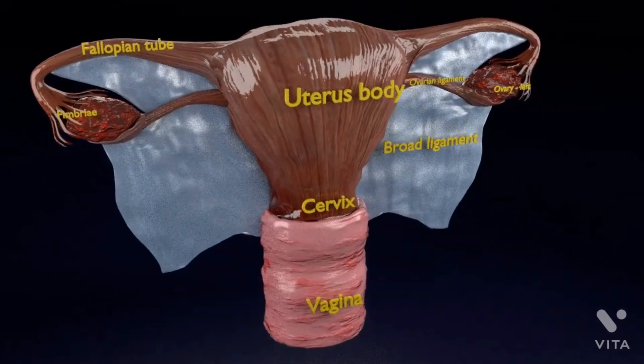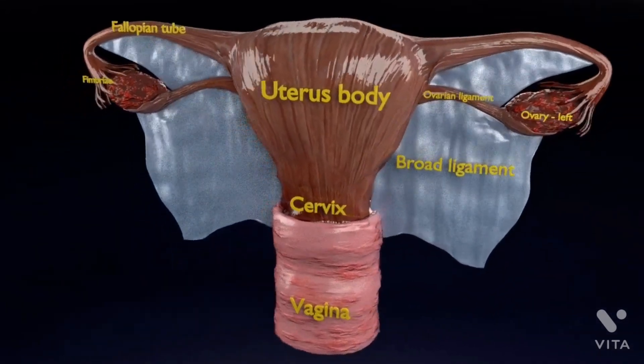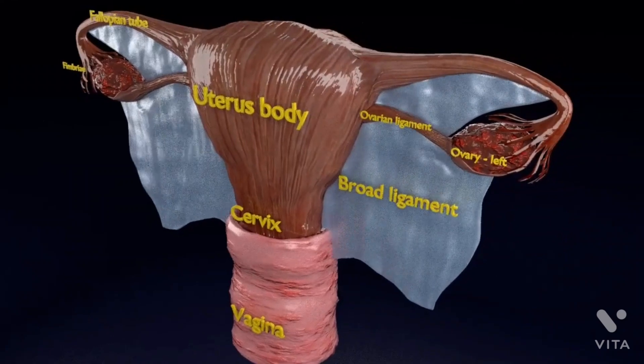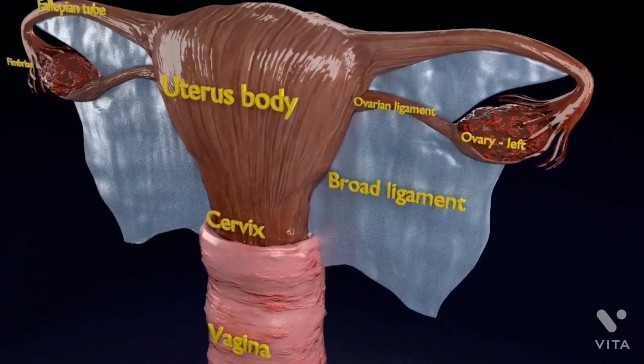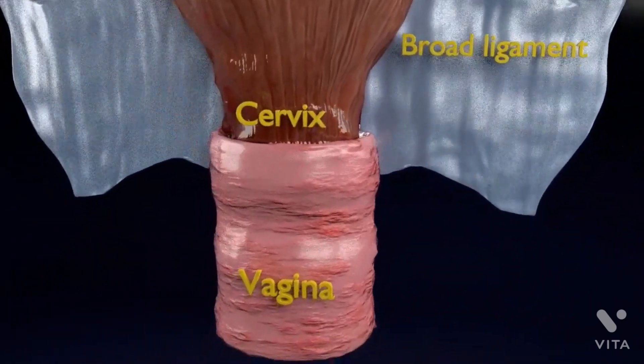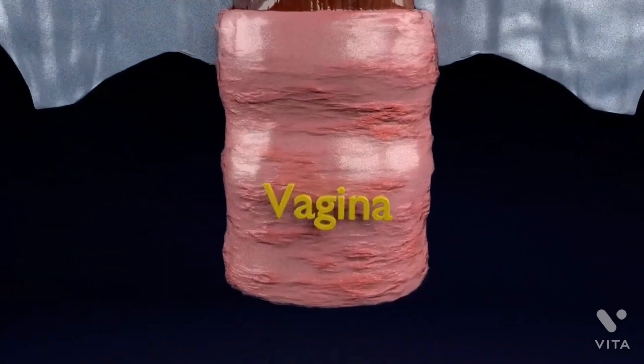The model in this video illustrates the internal female sex organs. Internal female sex organs are the vagina, uterus, fallopian tubes, and ovaries.